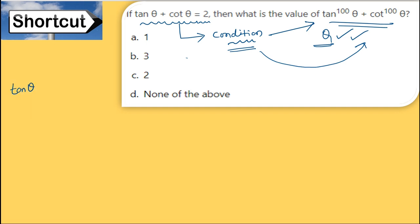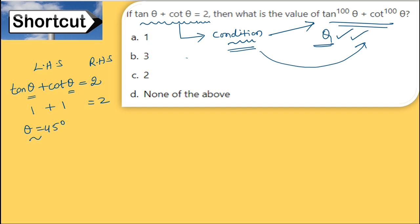The condition is: tan θ + cot θ = 2. LHS equals RHS when θ = 45°, because tan 45° = 1 and cot 45° = 1, so 1 + 1 = 2. The condition is satisfied.